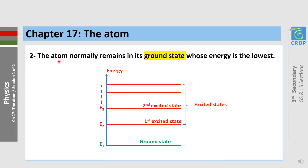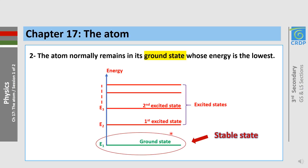Second assumption: the atom remains normally in its ground state, whose energy is the lowest. The ground state is the stable state. Higher states are excited states — this is the first excited state, the second excited state, and so on.